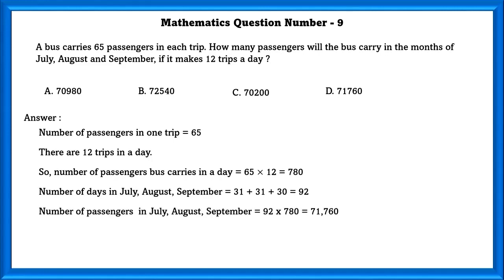And in order to find how many passengers were there in 92 days, we have to multiply 92 and 780. If we do that, we will get 71,760.